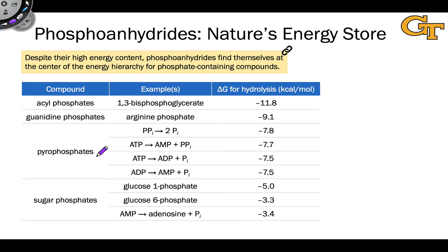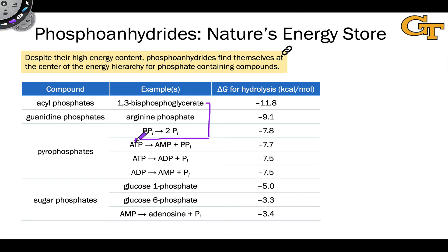To give some perspective, it's useful to look at ATP in the broader spectrum of organophosphoanhydrides. Given that ATP is nature's energy storage molecule, you might think it's one of the highest-energy molecules available — but when you look at the full variety of organophosphorus compounds, pyrophosphates and phosphoanhydrides are actually somewhere in the middle. At the very top are acyl phosphates, which we'll see in action during glycolysis. These are the phosphorus-containing molecules that ultimately give rise to the formation of ATP — there has to be something higher in energy than ATP in order to make it in the first place, and acyl phosphates are essentially one of the ways that's done.